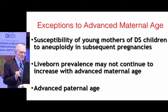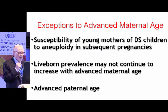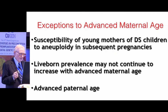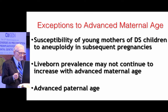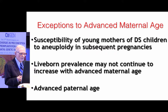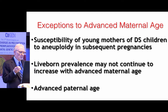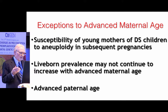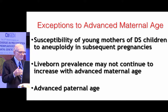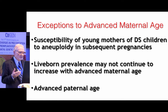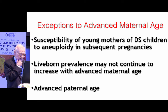Are there exceptions to advanced maternal age? The susceptibility of young mothers of Down syndrome children to aneuploidy in subsequent pregnancies has been very well confirmed. Are these young mothers not really young biologically speaking — are they biologically like women of advanced maternal age? This gives an answer of sorts, but it certainly doesn't explain the underlying molecular mechanisms that create this situation.